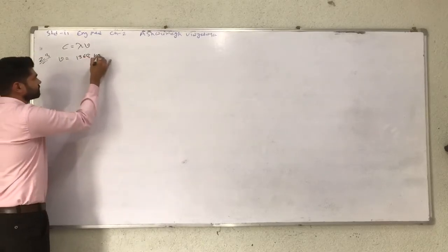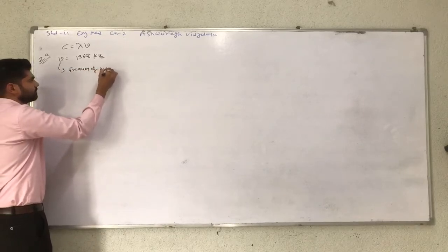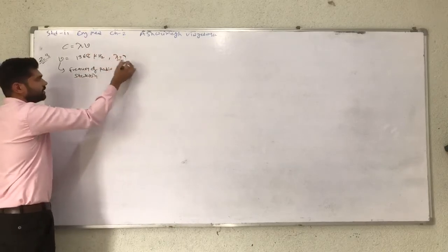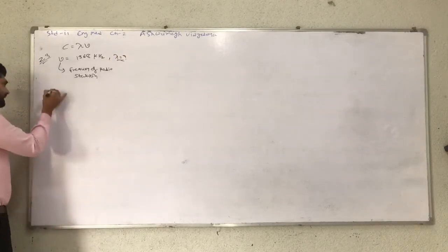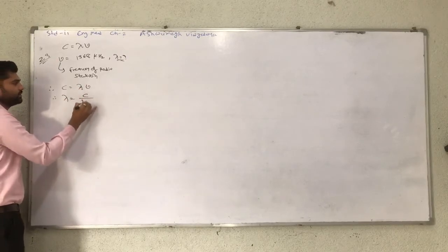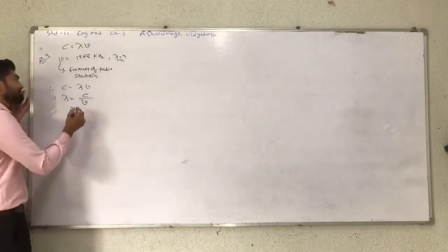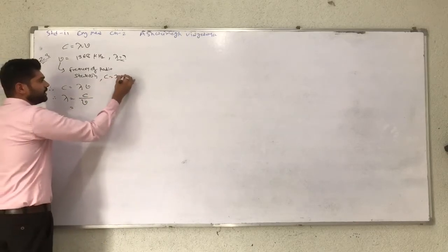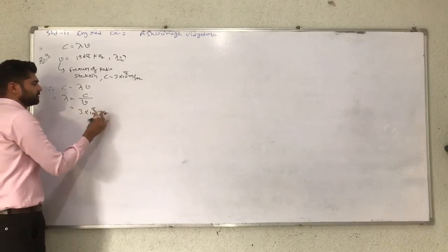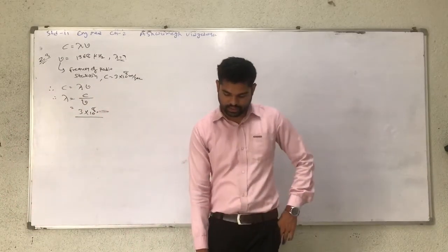So, finally we need to find the wavelength. Using the lambda into mu equation, the final equation is: lambda is equal to C divided by V. C means speed of light. The value of C is equal to 3 into 10 raise to 8 meter per second. The value of frequency is given in kHz, so we need to convert it.